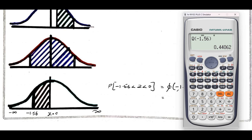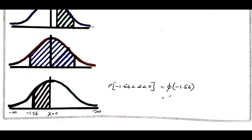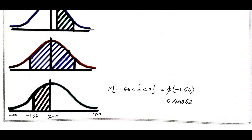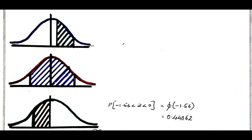That is why in the distribution table, they have provided only positive values. So directly I can write this as the shortcut for the probability of the normal distribution of minus 1.56 to 0. Now, moving to the rest of the problem.